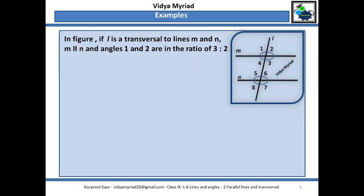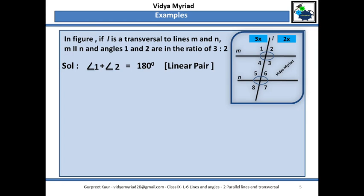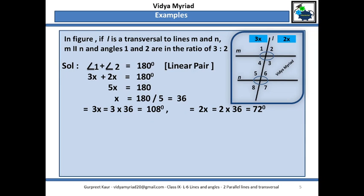Next question — same figure, but now it is given that angles 1 and 2 are in the ratio 3:2. Angles 1 and 2 are forming a linear pair, so their sum is equal to 180 degrees. From this I can find x easily, and once I know x, I know their angles: angle 1 is equal to 108 degrees and angle 2 is equal to 72 degrees.